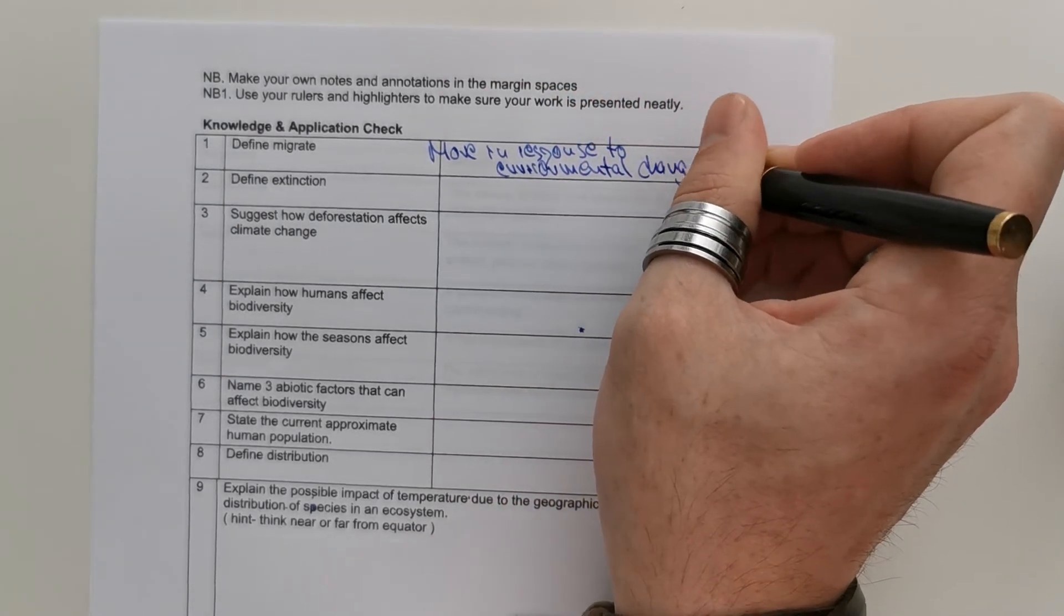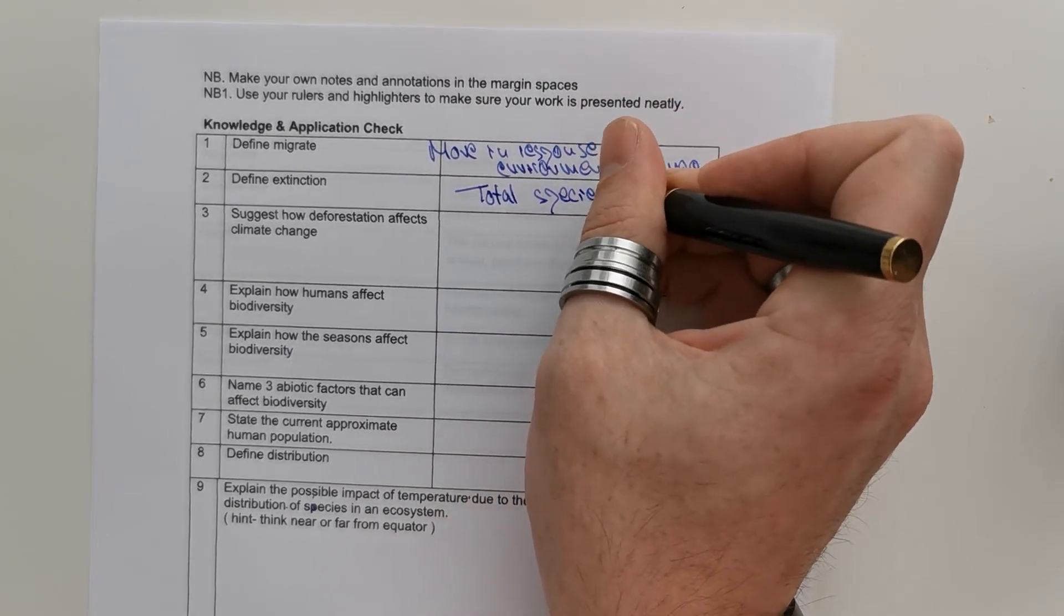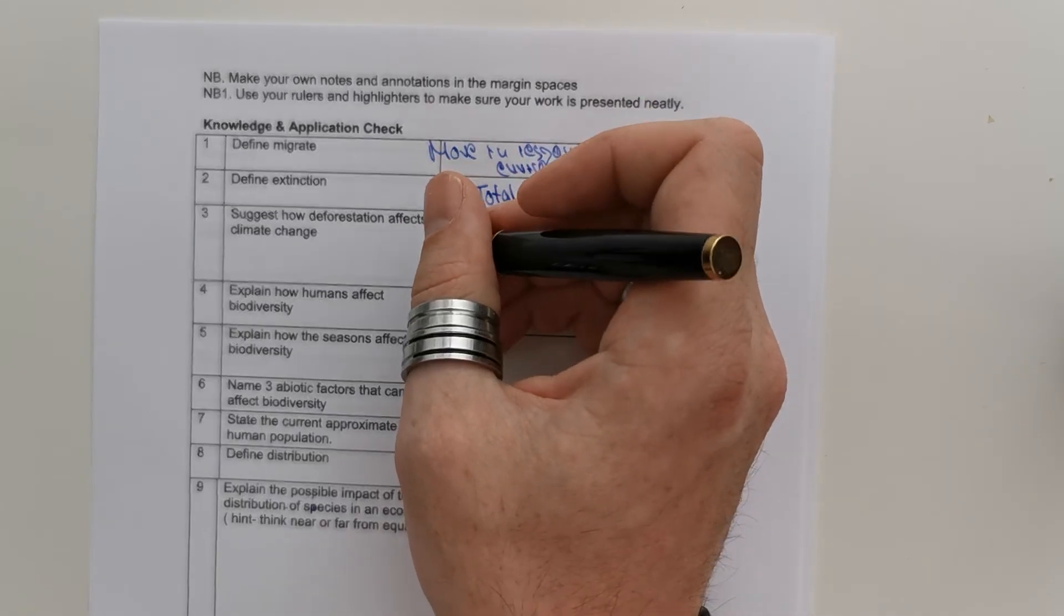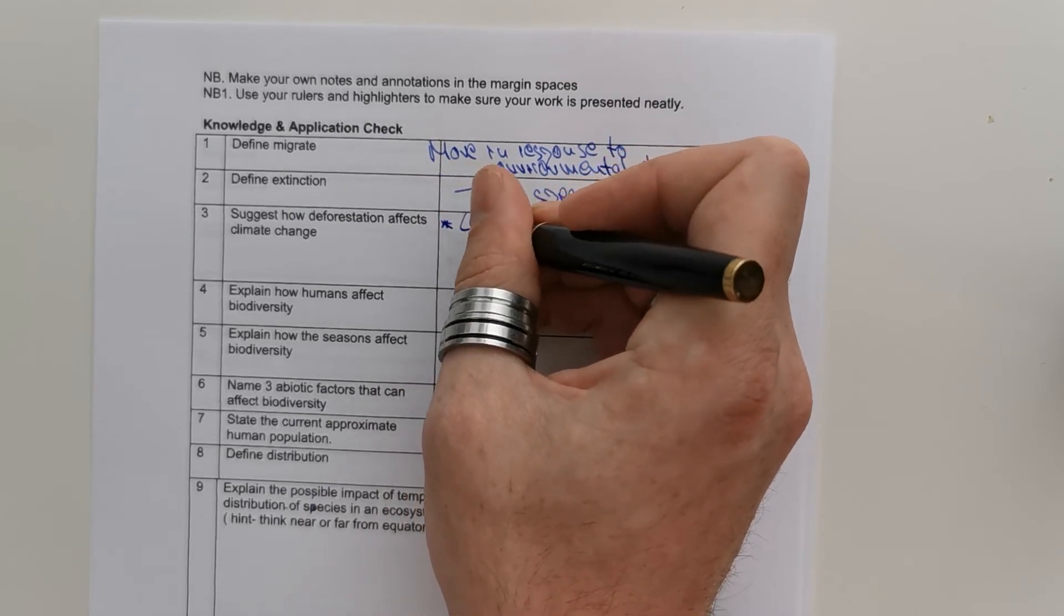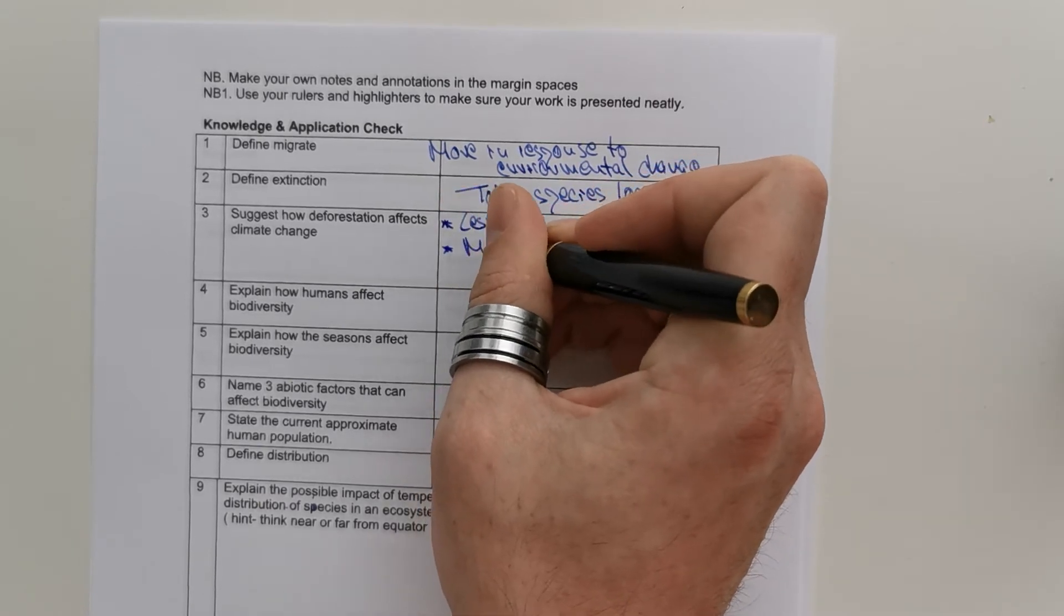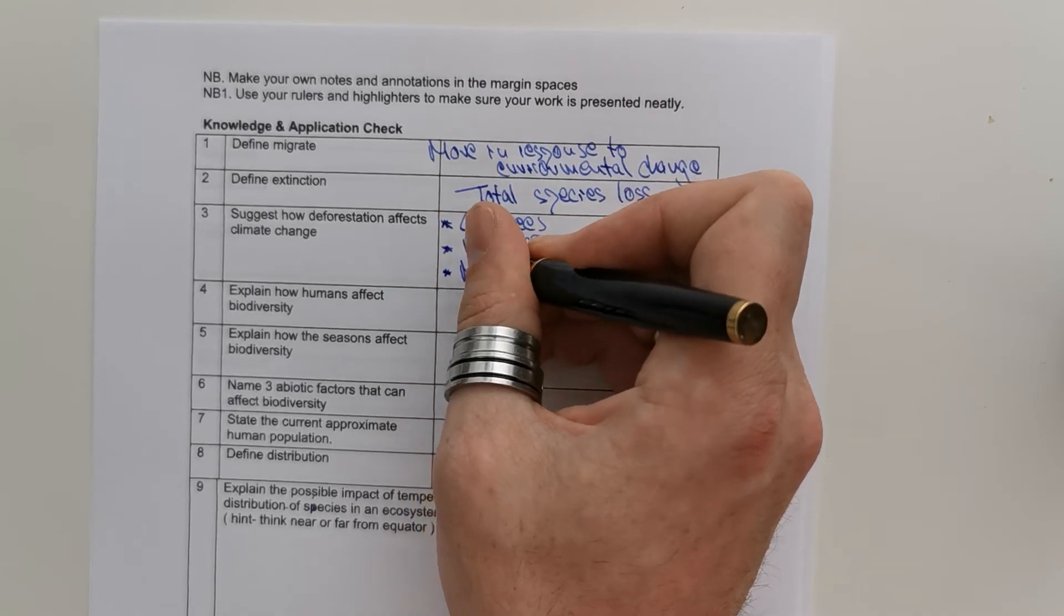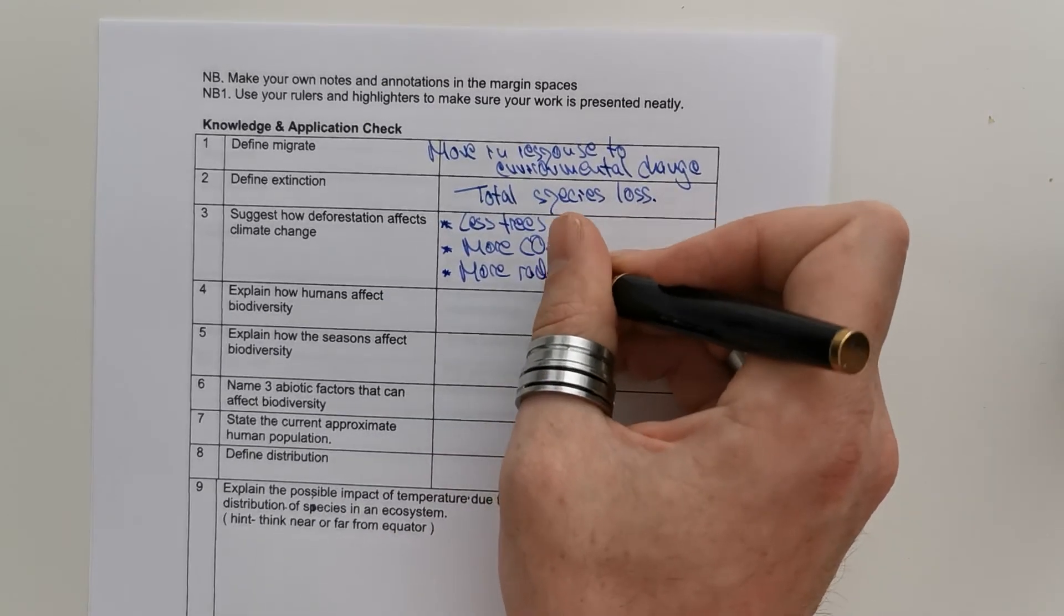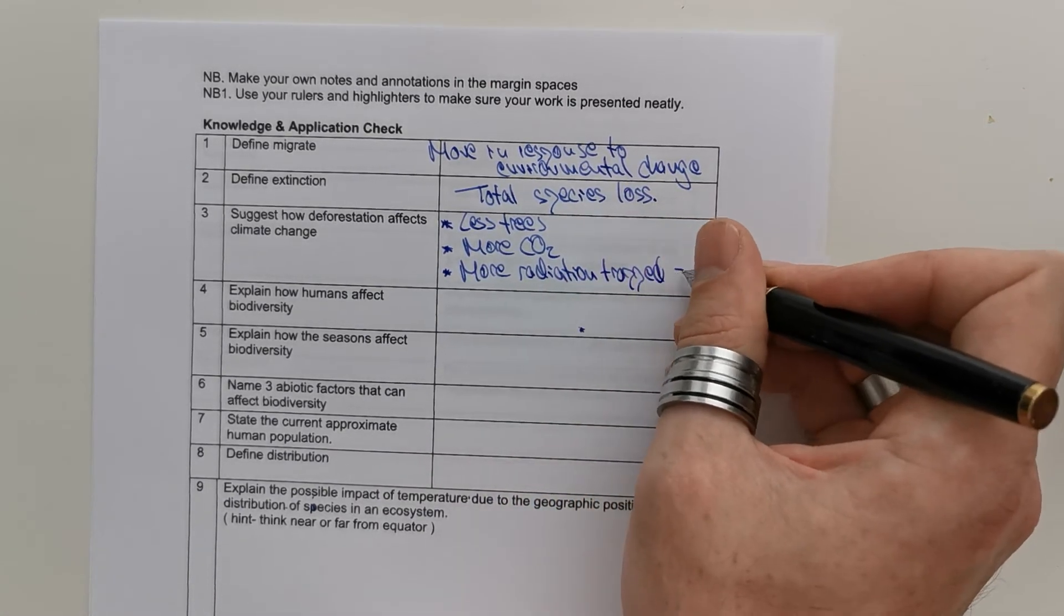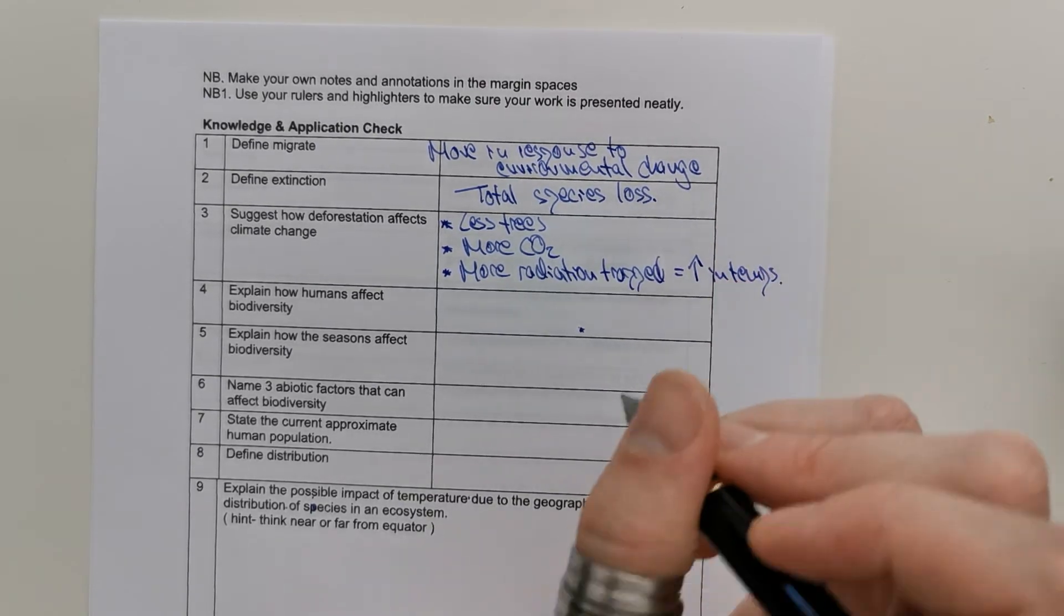Define extinction. I've done this before. Total species loss. So, deforestation, how does it affect climate change? So, less trees gives more CO2 in the atmosphere. More radiation is trapped, which equals an increase in temperatures. Good.